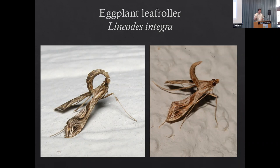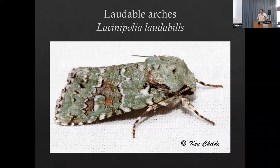You can see this one pretty easily on a white sheet, but if this one's resting on a branch that has some lichen on it, it is just magnificently camouflaged. That's one of the ways that our moths stay alive during the day - they find a spot that hopefully matches what they look like and just stay still. If it's on a branch with some grayish lichen, it blends in perfectly.